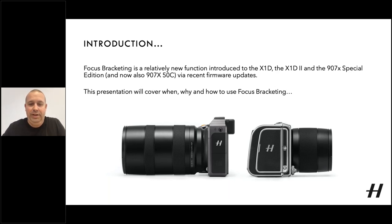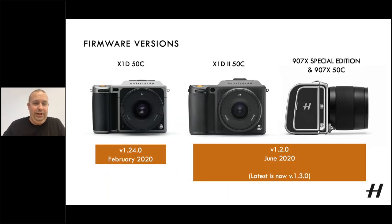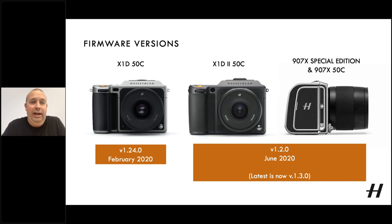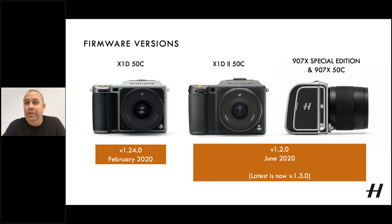Regarding the firmware updates: for focus bracketing to be available on the cameras listed, for the X1D 50C you would need version 1.24, which was launched in February 2020. For the X1D2 or the two 907s — both the Special Edition and the 907X 50C — you would need at least version 1.2.0, which was launched in June. The latest is actually 1.3.0, which also has focus bracketing. So you need at least 1.2.0 for focus bracketing to show on your X1D2 or 907X.